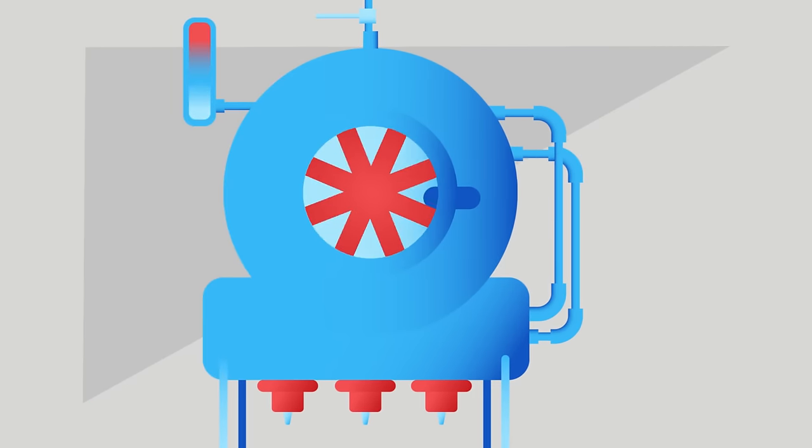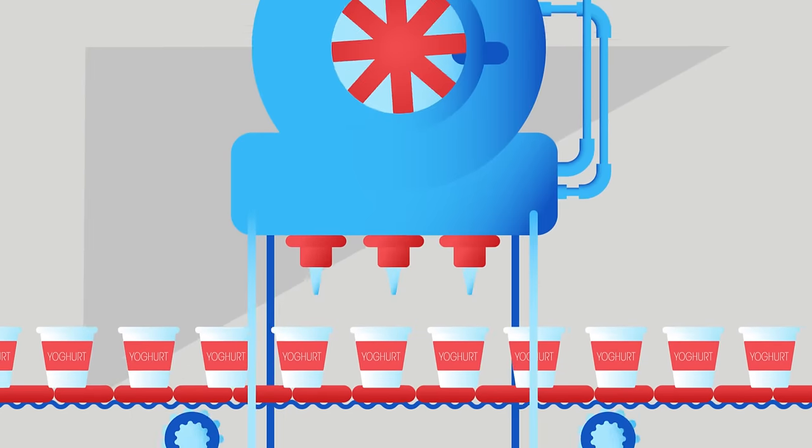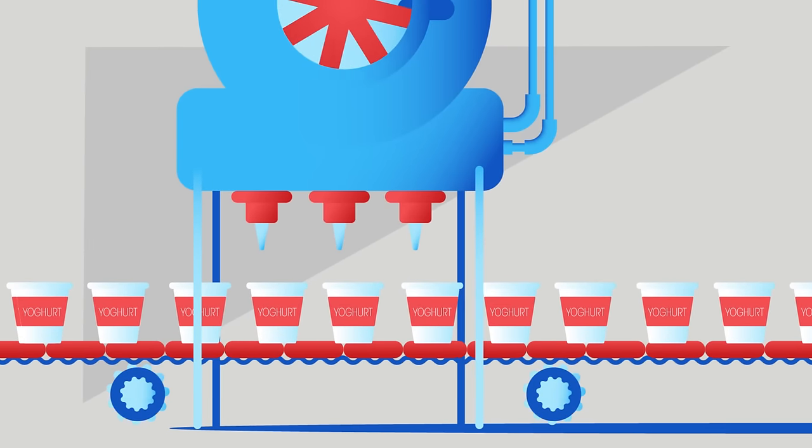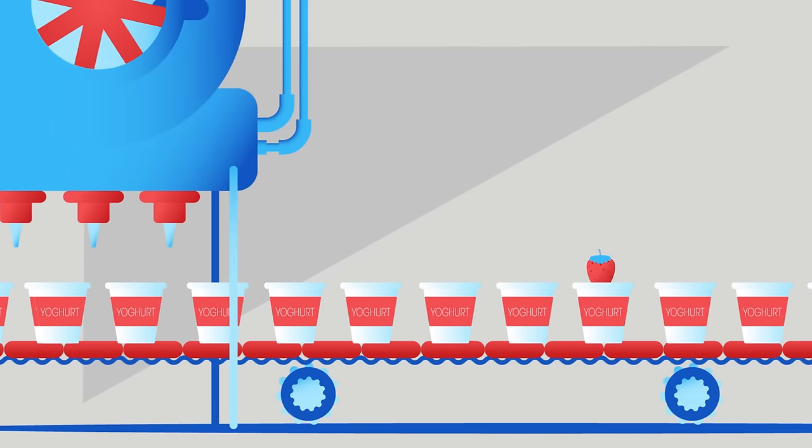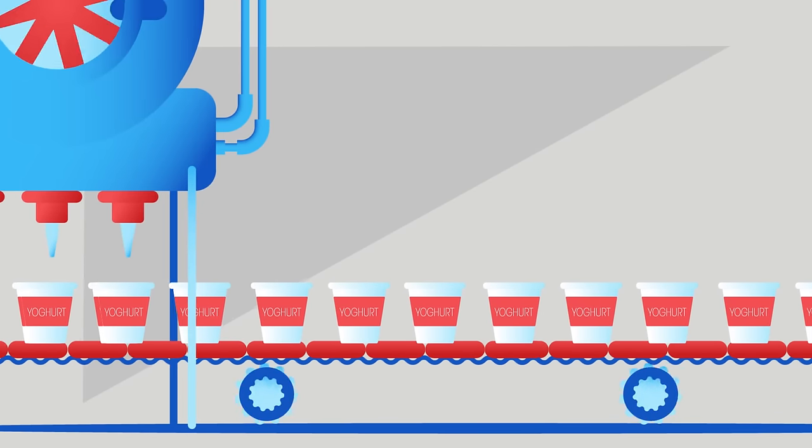The mixture is now stirred and cooled to 5 degrees Celsius, and we've made natural unflavored yogurt. At this stage we can add flavorings and fruit. Now it's ready to be packaged and sold. Delicious!